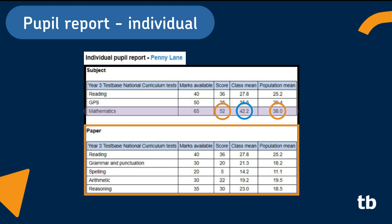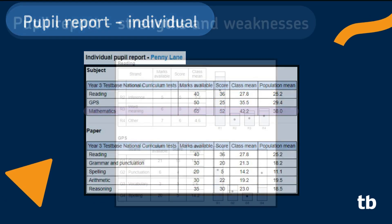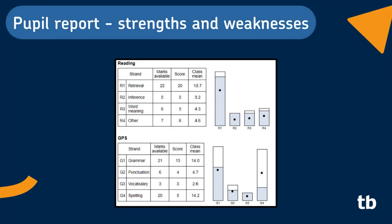Use the second table to see if there is a greater strength or weakness in a particular paper. And finally, use this chart to quickly identify areas of strength and weakness and get a useful insight into how your pupils' performance compares with others. When enough marks have been entered across Testbase schools, a black dot on the bar graph will show the population mean so you can see how a pupil or class has performed against others.